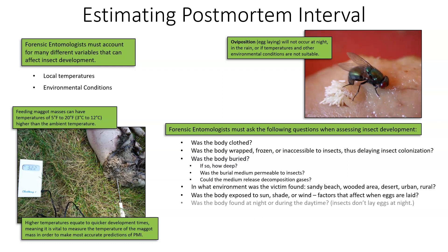Was the body found at night or during the daytime? Again, insects don't lay eggs at night and therefore will not colonize the body at night. Was the victim exposed to toxins, chemicals, or drugs that would affect insect growth rates? If the individual was poisoned or under the influence of certain chemicals, those chemicals will be part of the tissues and can become part of the fly larvae as they start consuming those tissues. If those toxins affect insect growth rates, that will either speed up or slow down insect development.